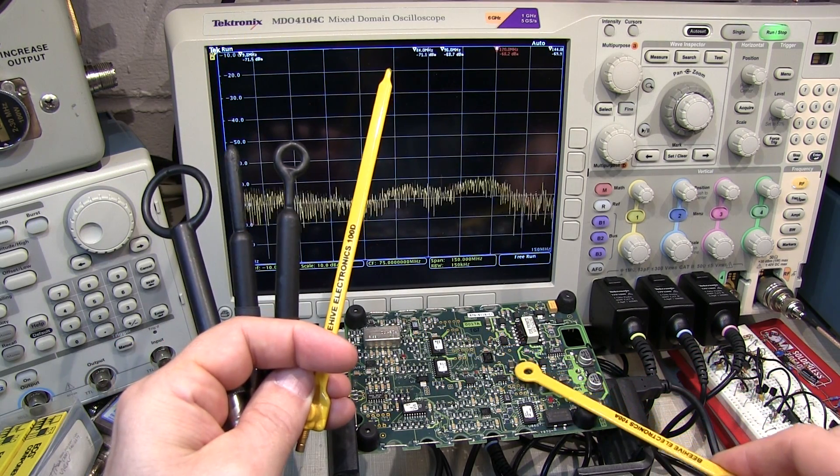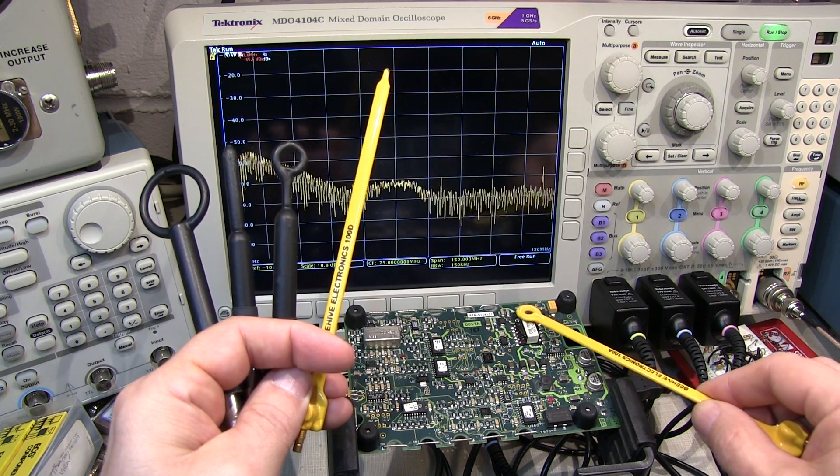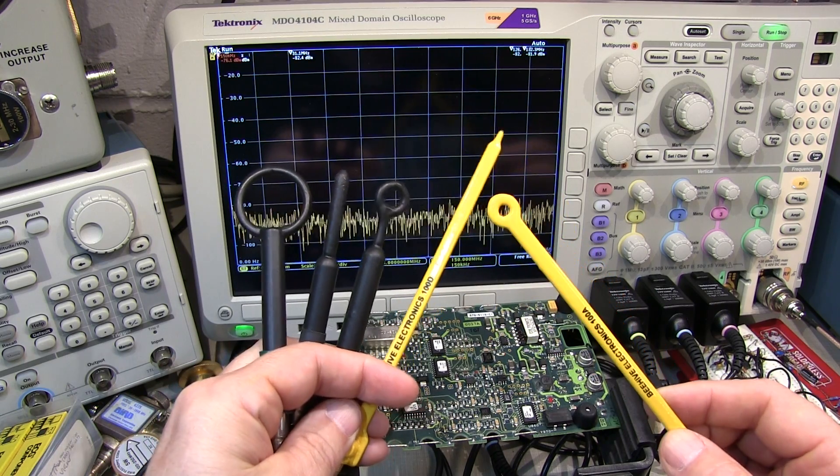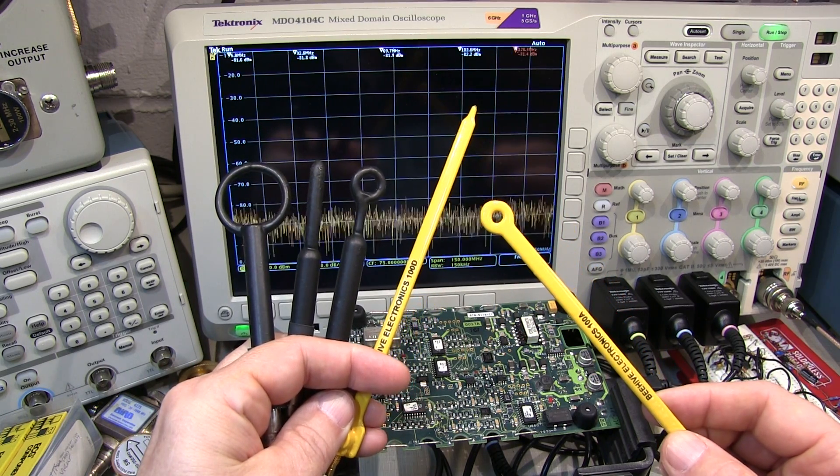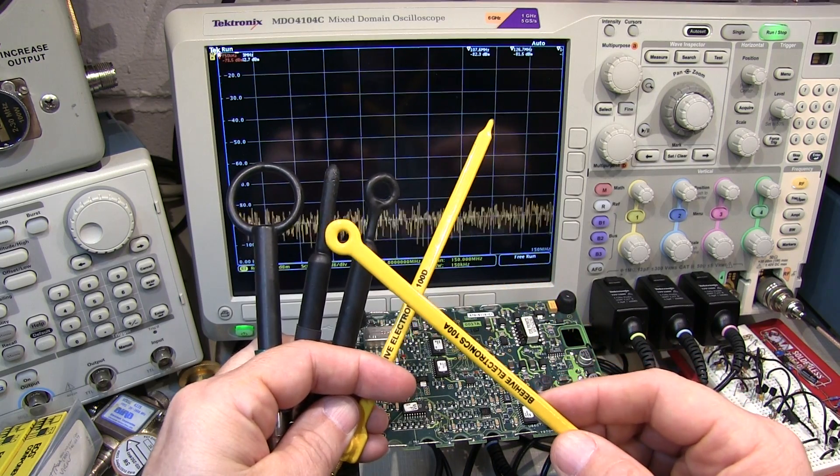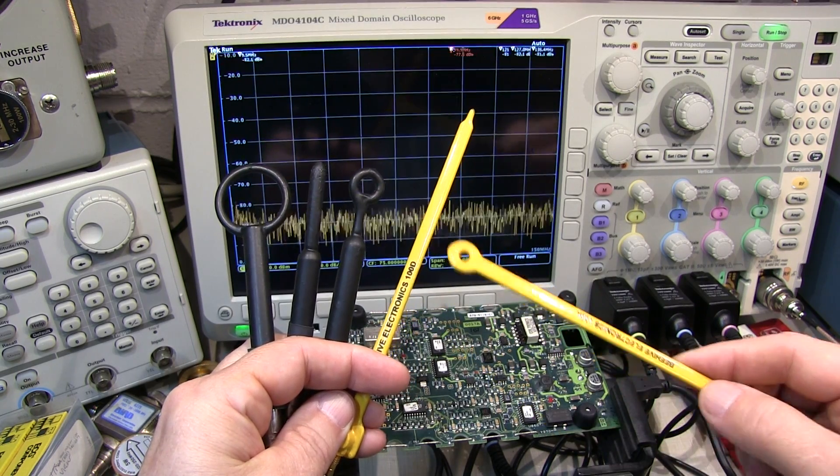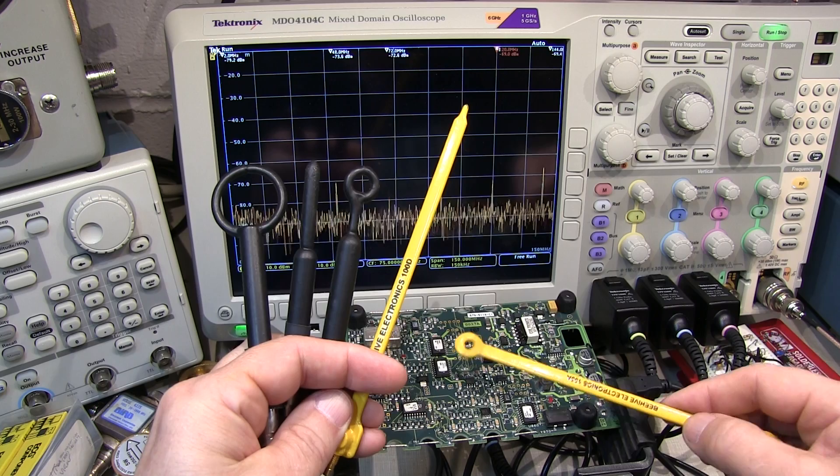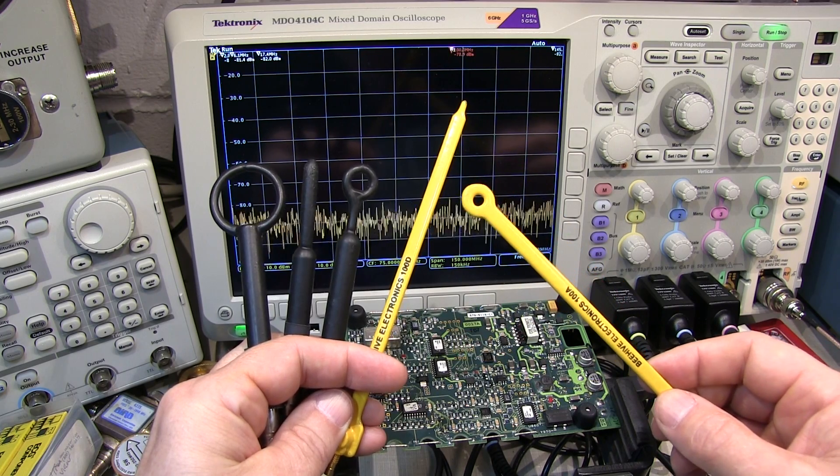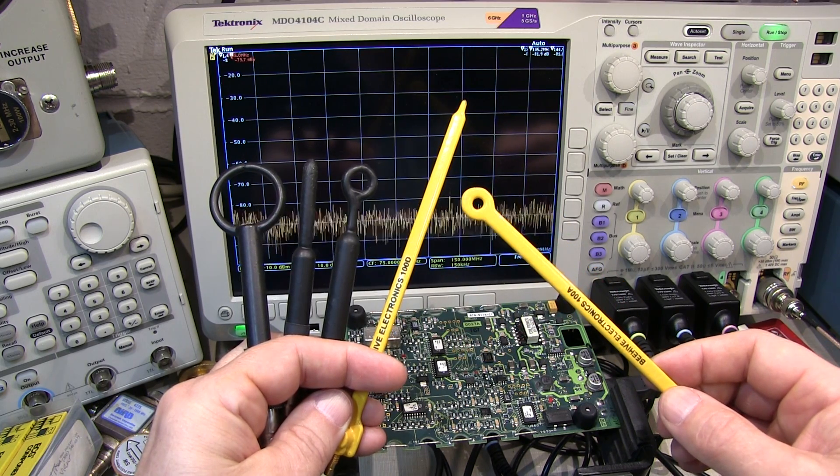But in order to make the most efficient use of these probes and to understand the results that you get from them, it's important to understand the differences between the different types of probes and the differences between the measurements that you make in the near field versus measurements observed in the far field. So that's what we're going to cover in today's video.